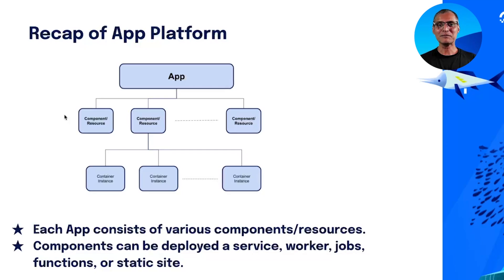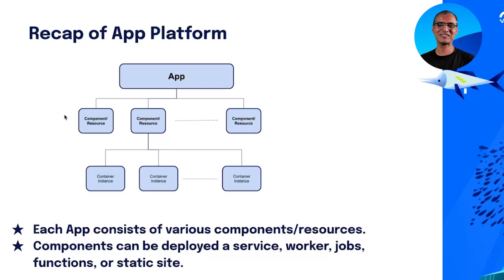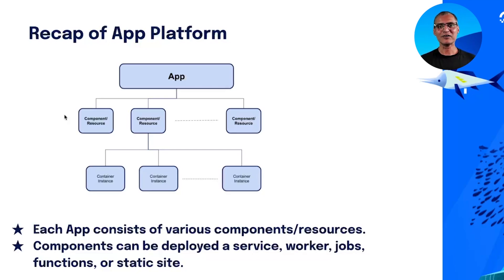App Platform simplifies your entire application life cycle. You bring in your code or container image and it does the rest — from building images, to deploying, to monitoring and scaling. At a conceptual level, an app consists of a set of components or resources and each resource has its own configuration.